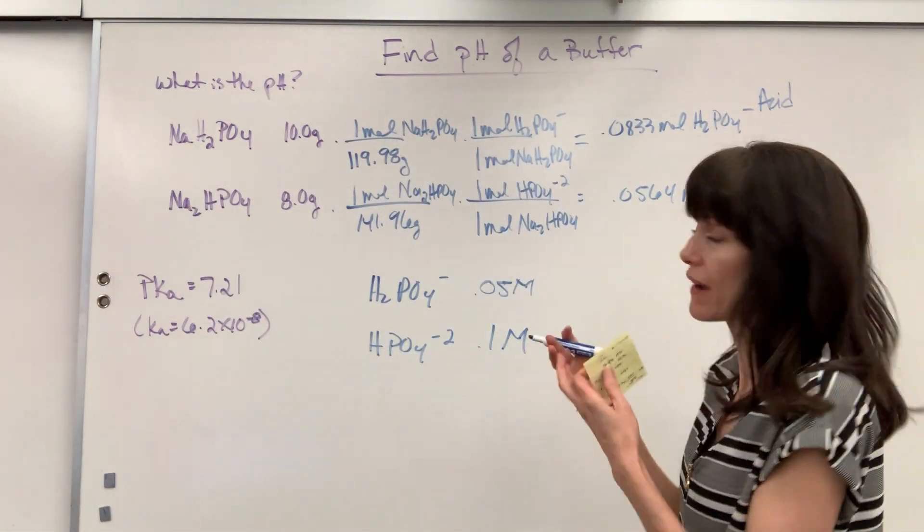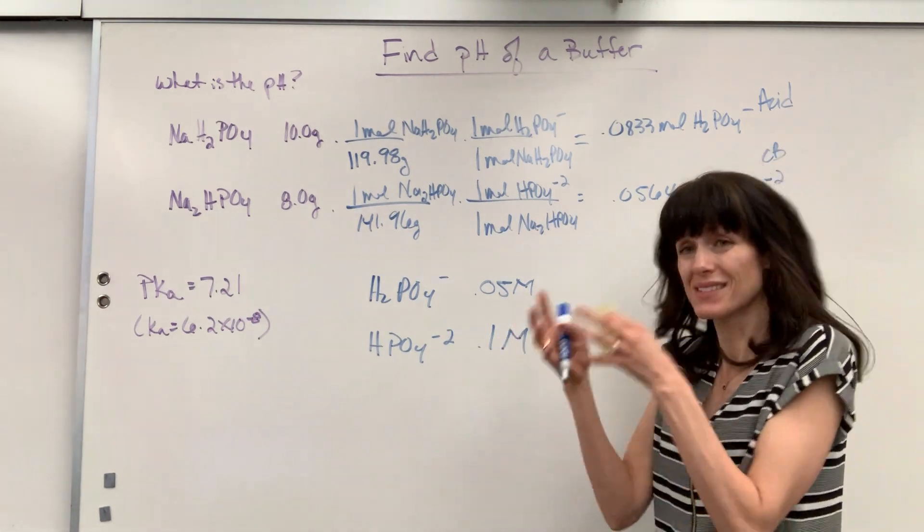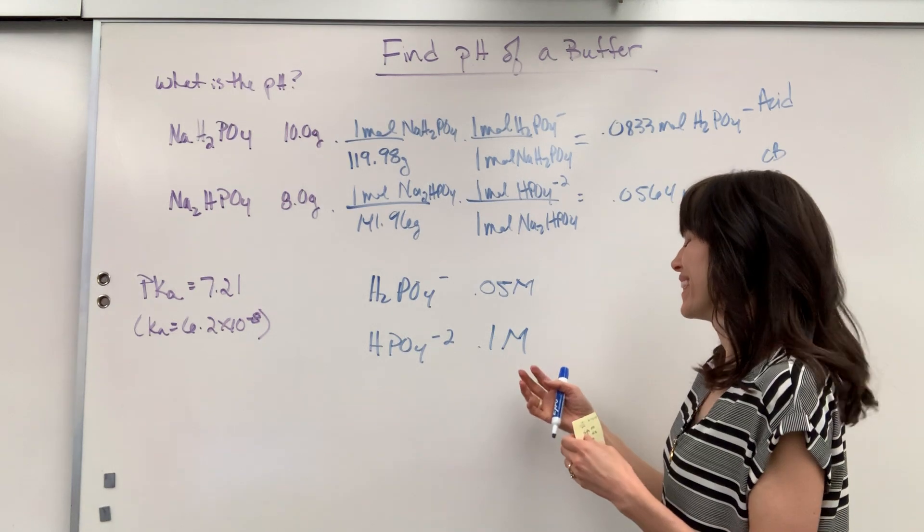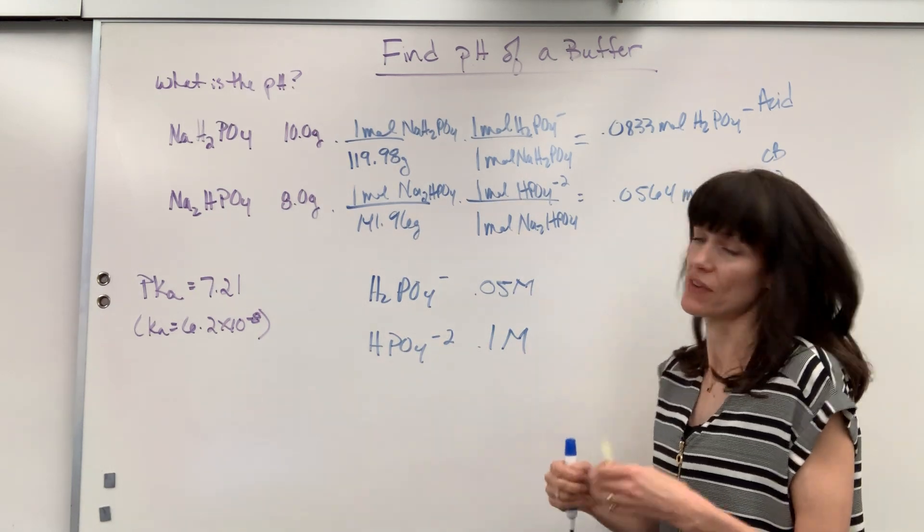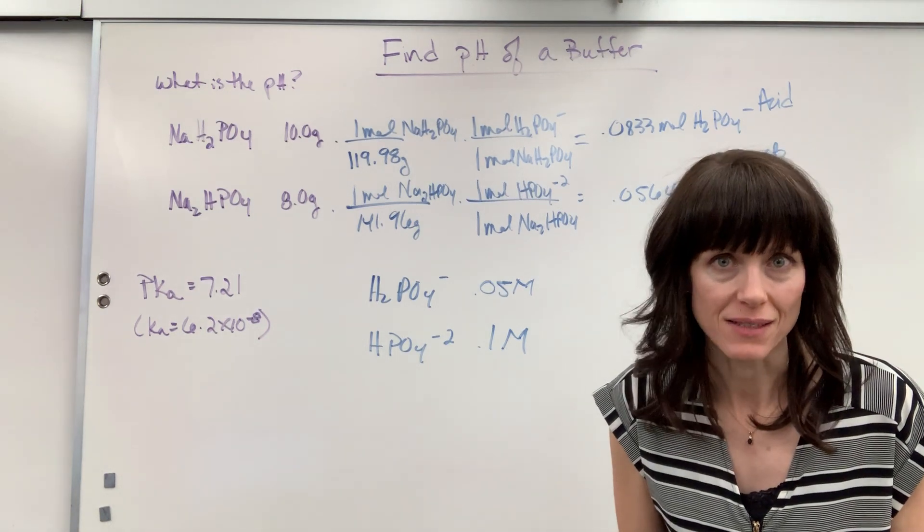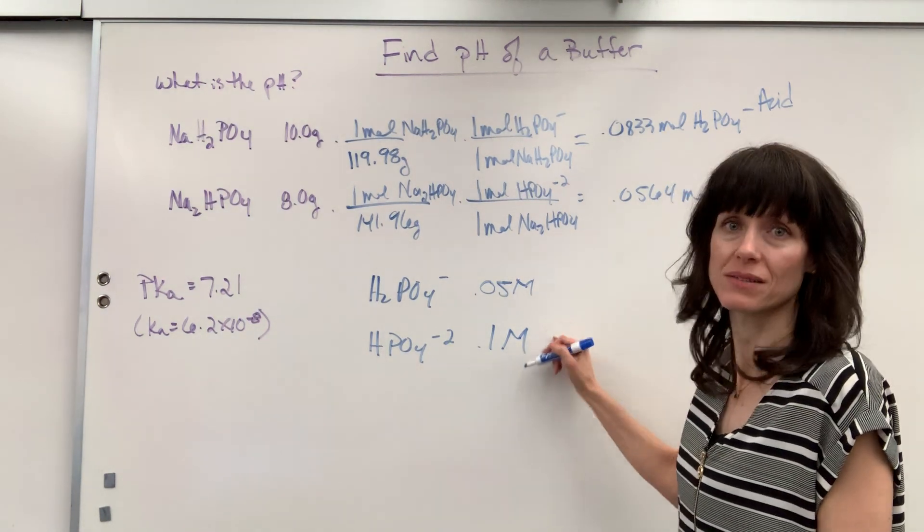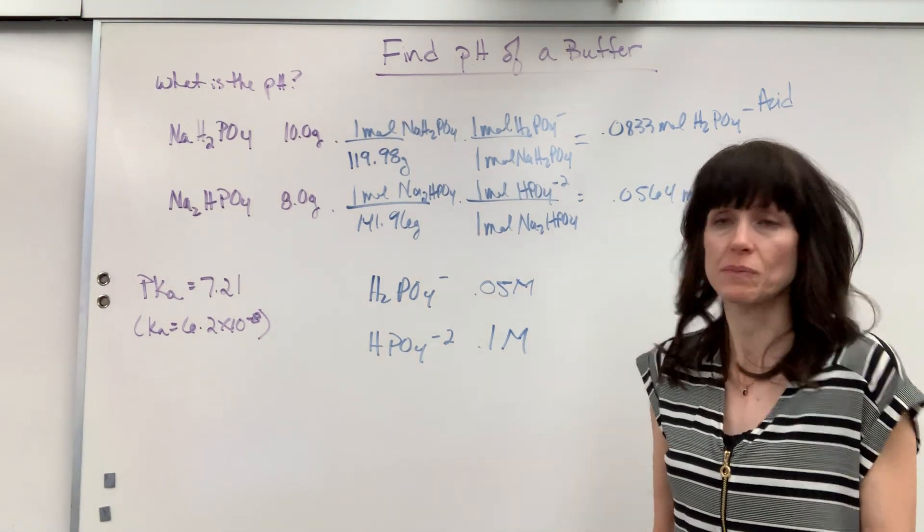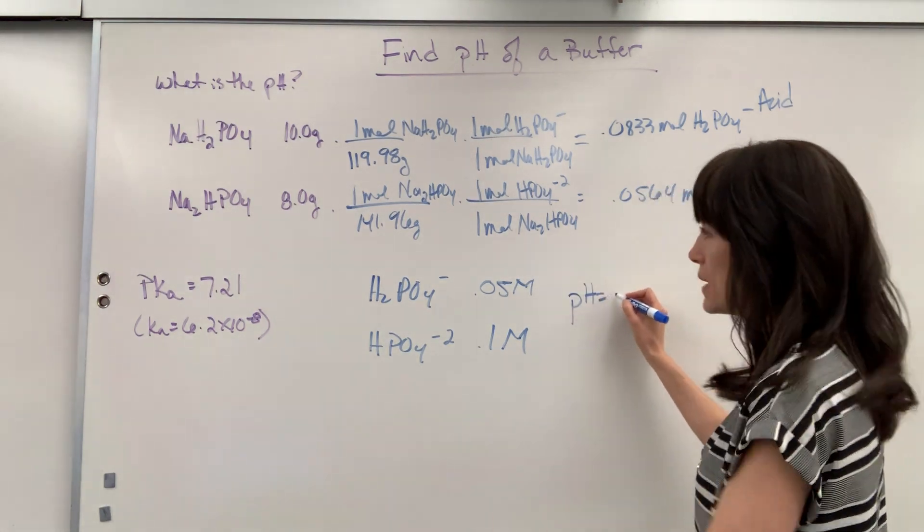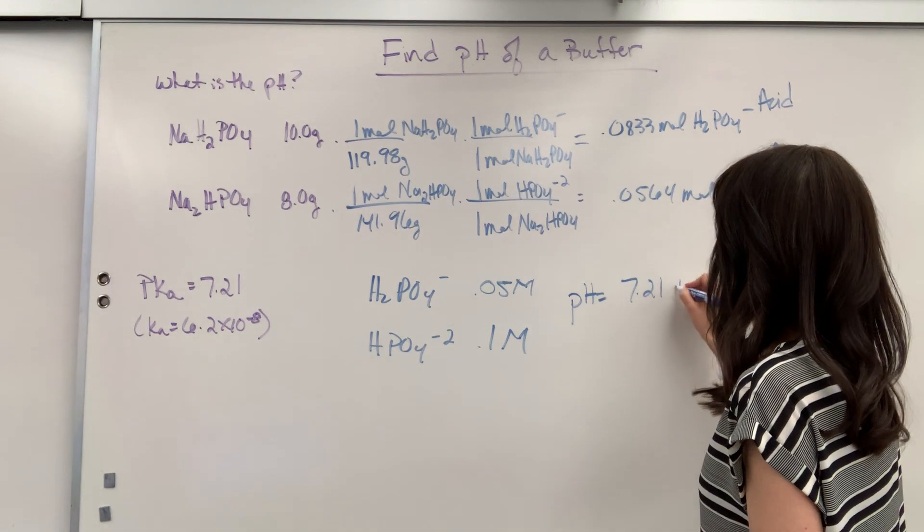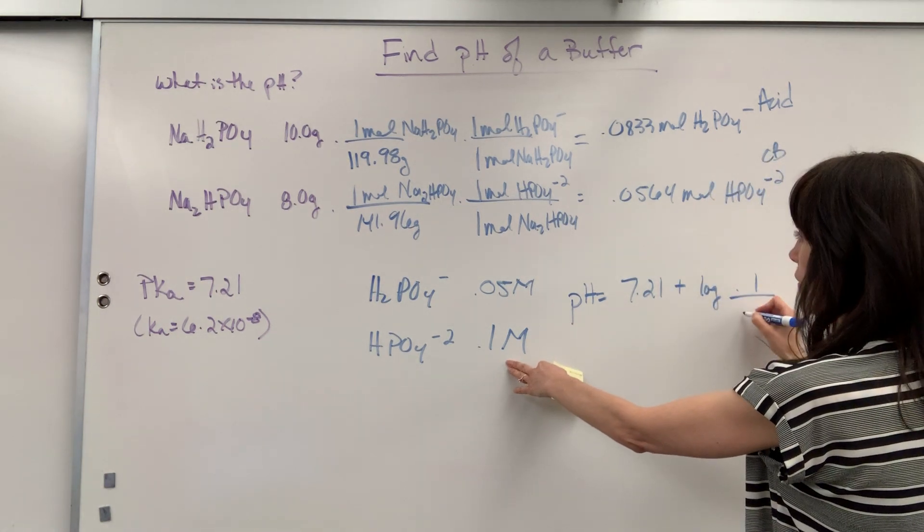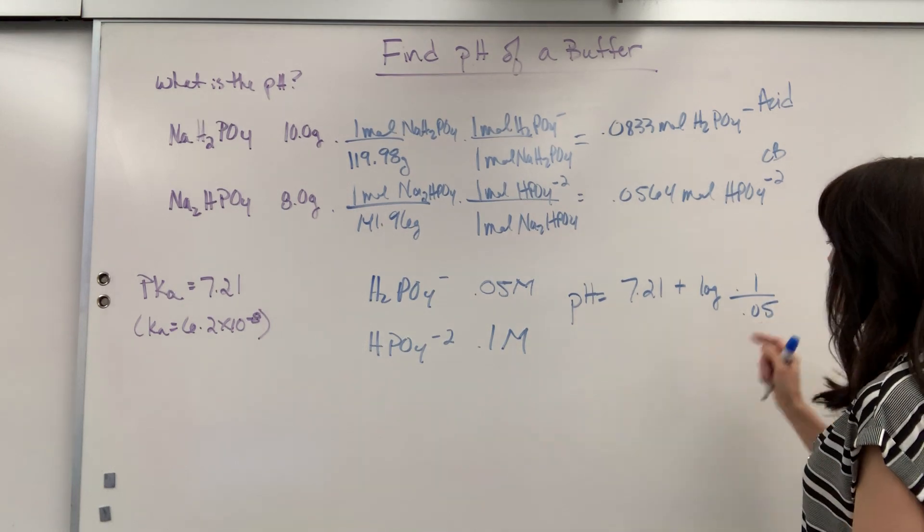So this is what you're given. They're going to say hey you have 500 mils just so you know inside this solution the molarity of dihydrogen phosphate is 0.05, the molarity of the hydrogen phosphate is 0.1. What's the pH? Easy easy easy. We have molarities given to us. Just plug it into Henderson-Hasselbalch. So pH equals the pKa which is 7.21 plus the log of conjugate base 0.1 divided by conjugate acid 0.05.